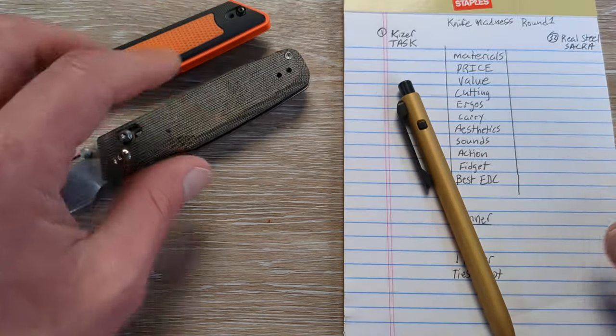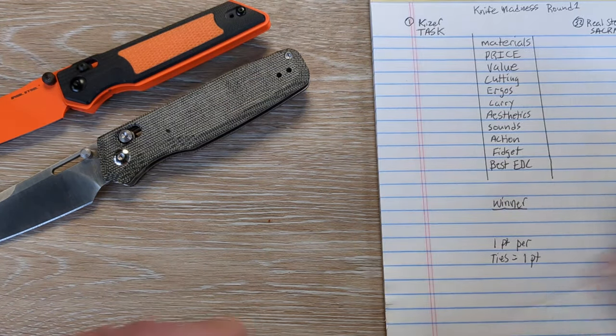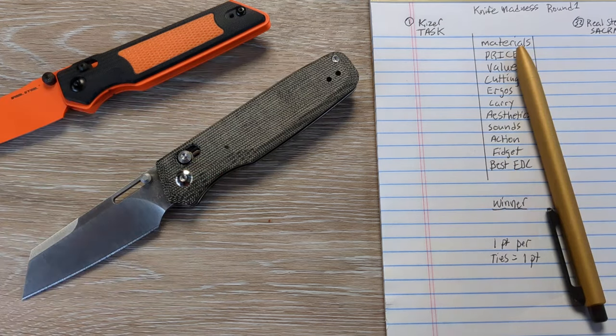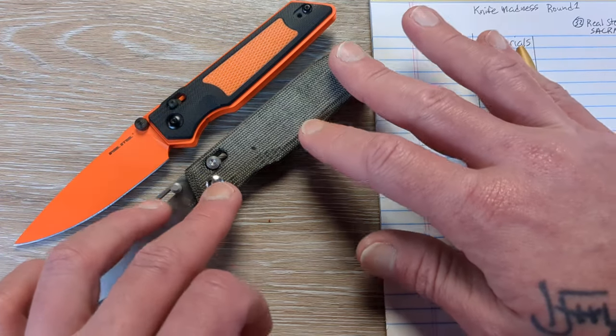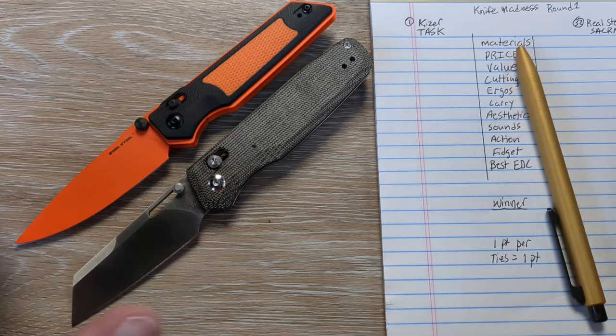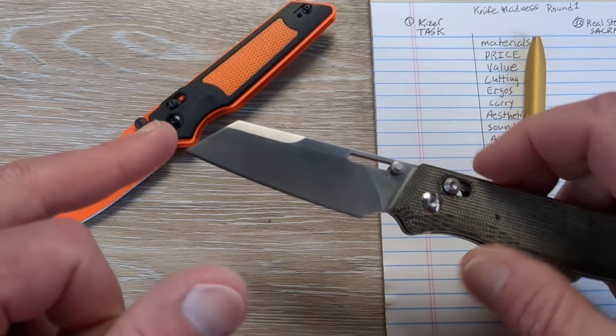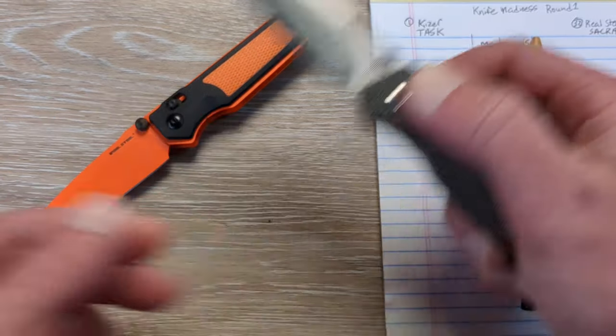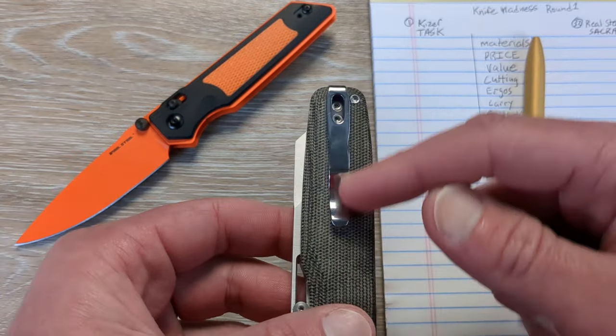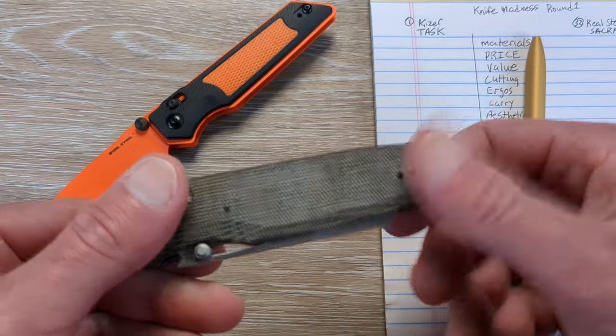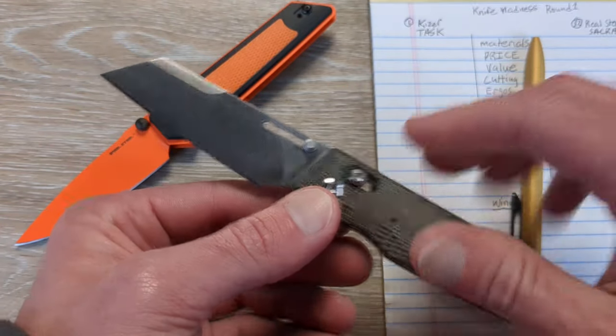A lot of thought and time went into something such as this. So the first category is going to be materials. With the Kaiser Task here, we're getting 154 cm. We have a satin sheep's foot style of blade here. We have the cutout and dull thumb studs for the deployment. We have micarta here, open construction. And then we do have a standard deep carry clip there, will be reversible. And then we have the clutch lock from Kaiser, which is fantastic.